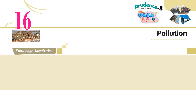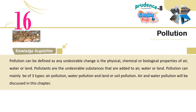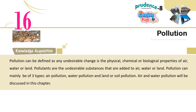Pollution can be defined as any undesirable change in the physical, chemical or biological properties of air, water or land. Pollutants are the undesirable substances that are added to air, water or land. Pollution can mainly be of three types: air pollution, water pollution, and land or soil pollution. Air and water pollution will be discussed in this chapter.